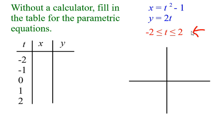So what I'm going to do is take my input, which is now my t, and then I just put it into my equation. So x is t squared minus 1. Negative 2 squared is 4, minus 1 is 3. And then I'm going to put that same t into here. 2 times negative 2 is negative 4.